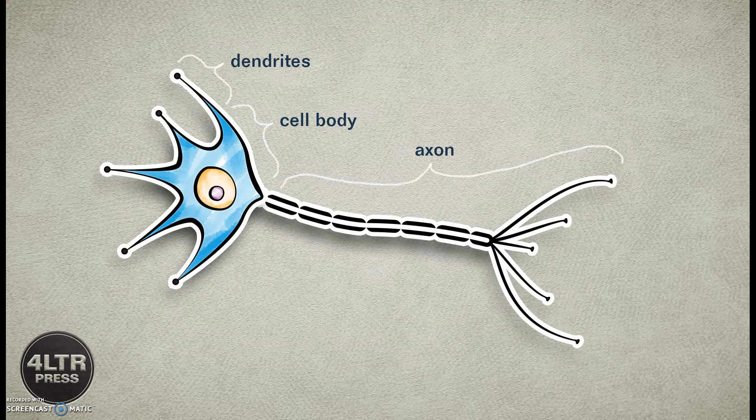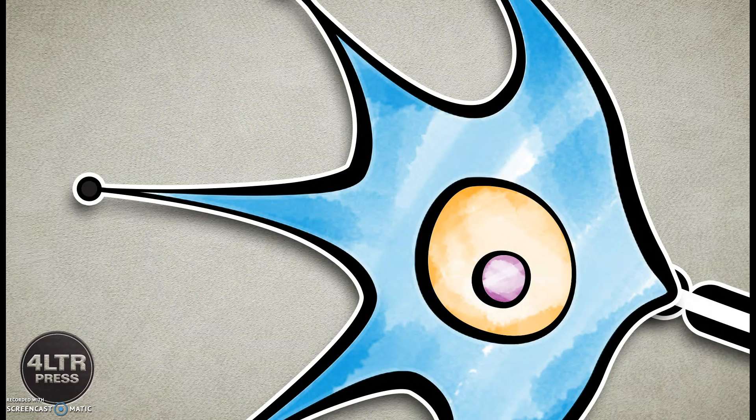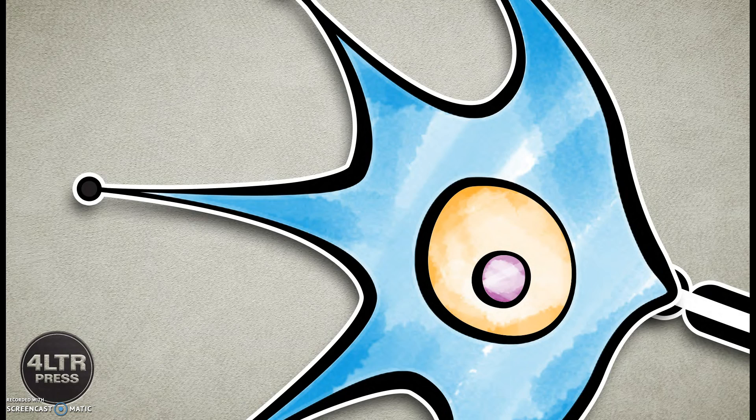Dendrites receive information from the axons of other neurons. A typical neuron may have many dendrites which resemble the trunks of branches of trees, and in fact, the word dendrite comes from a Greek word meaning tree.